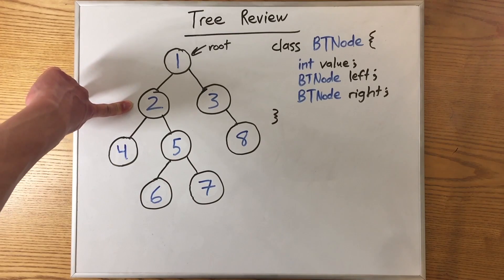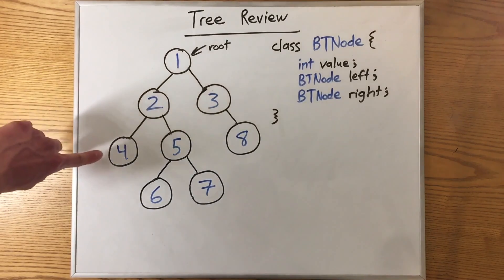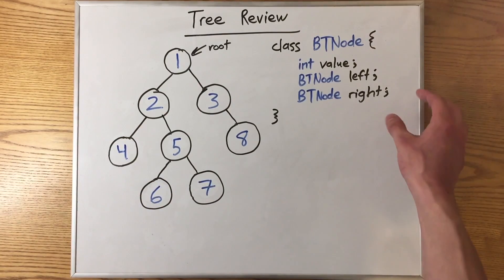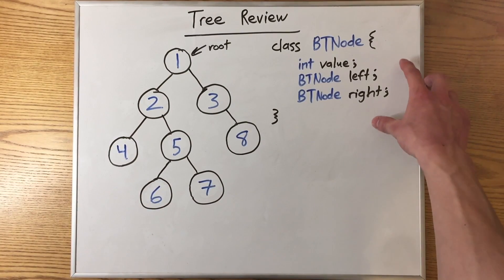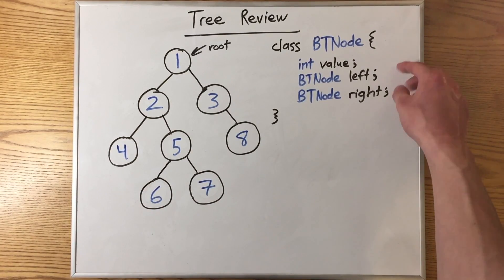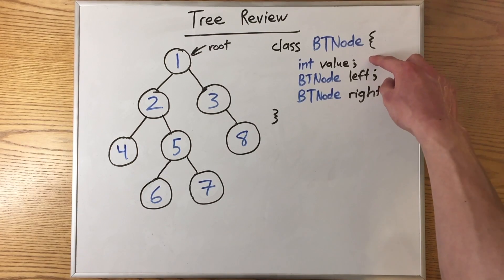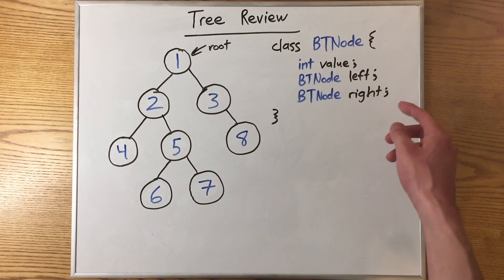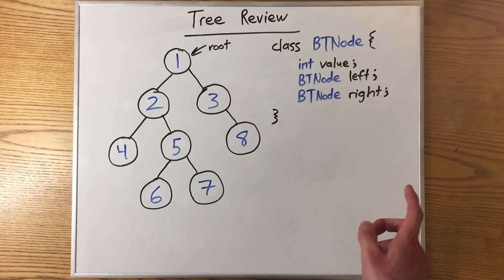So in a subtree rooted at the node containing two, it would contain this node, this node, this node, this node, and this node. We can describe each node in a binary tree with the btNode class, where each node has a value of type int, as well as left and right references to point to its left child and to its right child.